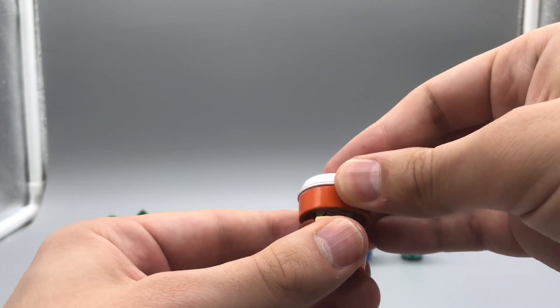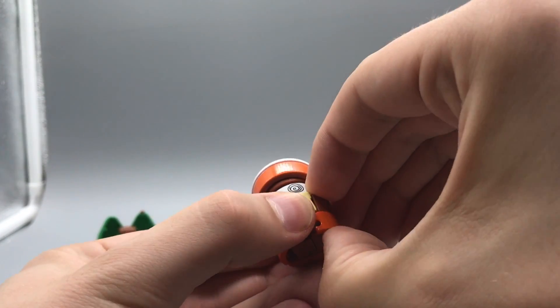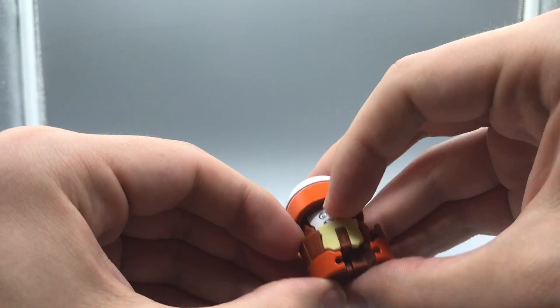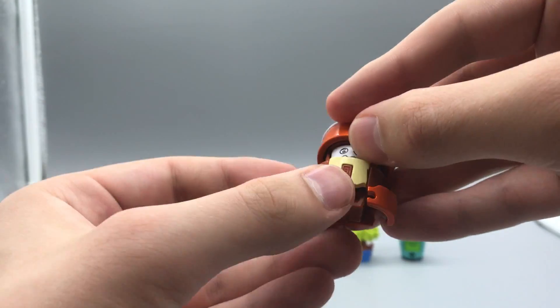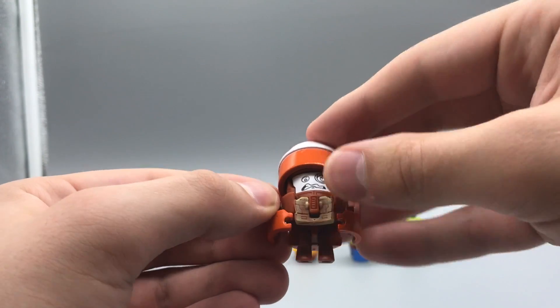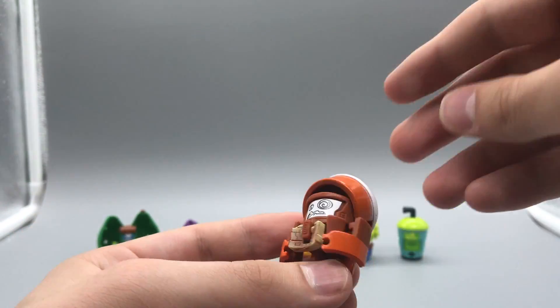Transformation-wise, we are going to lift the top. We're going to pull the arms out to the sides, like so. Fold the legs down, and then flip this chest panel down. And there is Latte Spice Whirl in her robot mode.